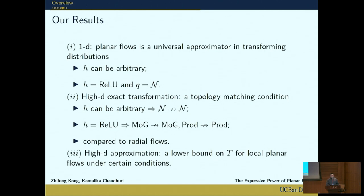For the high-dimensional settings, we provide some negative results for planar flows of moderate depth. For the exact transformation question, we developed a topology matching condition, which is a necessary condition that input-output distribution pairs must satisfy. We use these conditions to prove that for a certain number of planar flows, you are unable to transform between even very simple distributions, a mixture of Gaussian distributions, product distributions. We also compare to radial flows, which is another kind of simple flow.